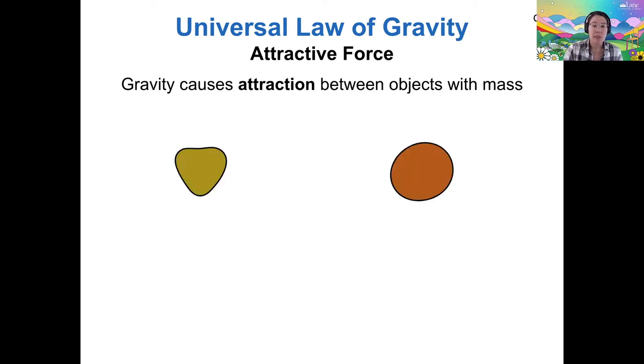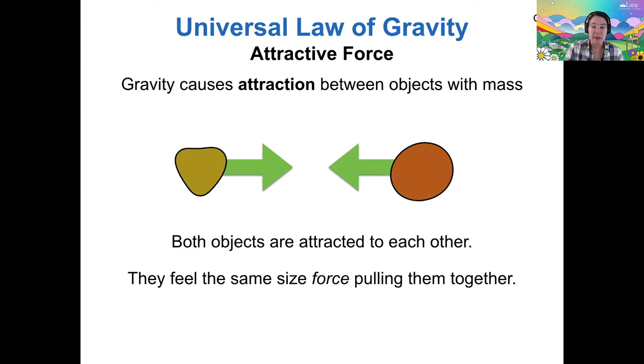So let's say that we have two asteroids. The two of them will feel a mutual attraction to each other because they have mass, and they feel the same size force pulling them together. I indicate that by having the arrows indicating the force that are the same size as each other, so they're equal and opposite in direction.